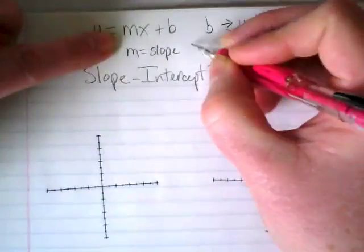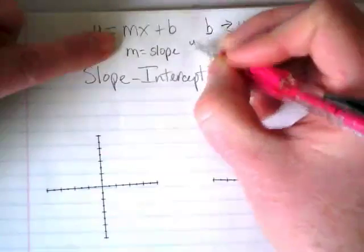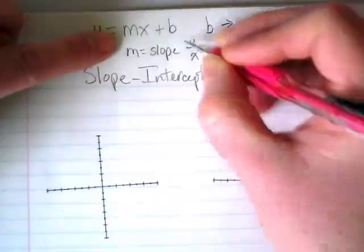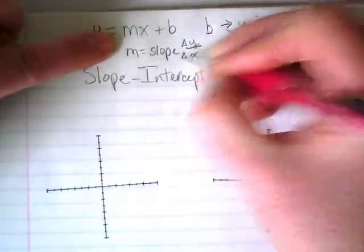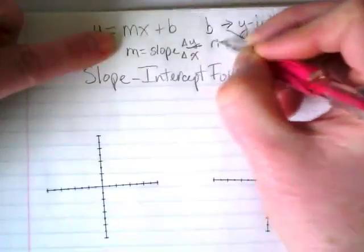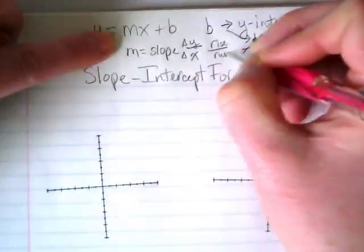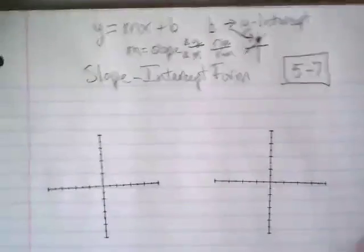And just a quick review, slope is the change in y over the change in x. Right? And we also call that rise over run. So just some notes on things we already know.